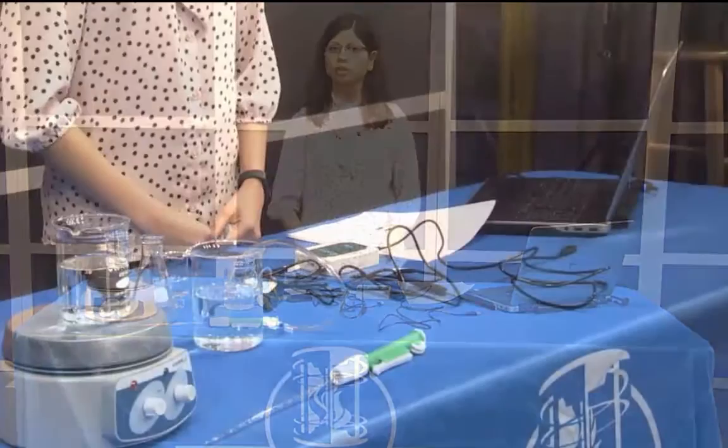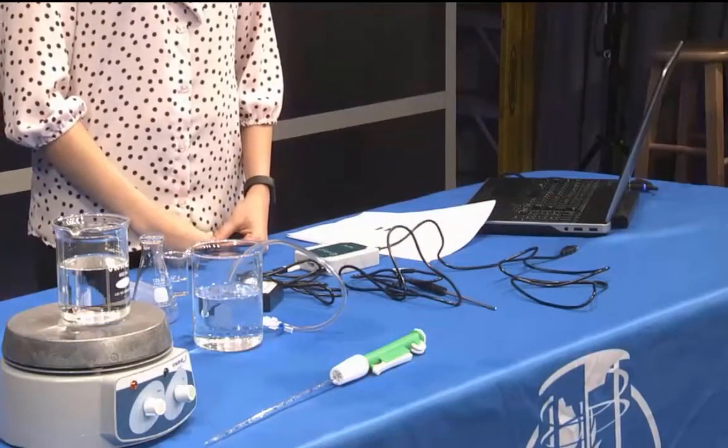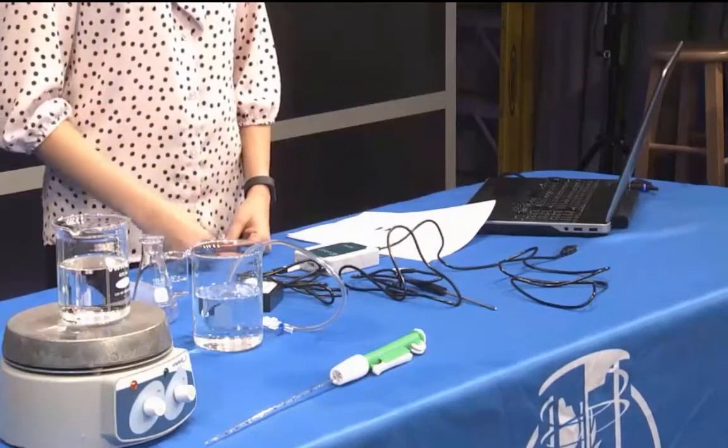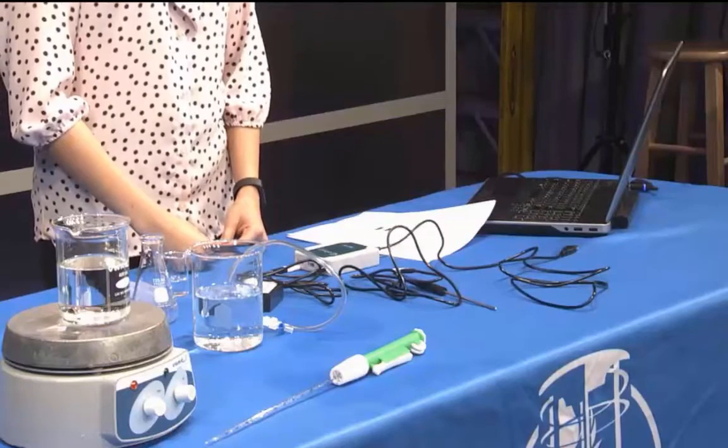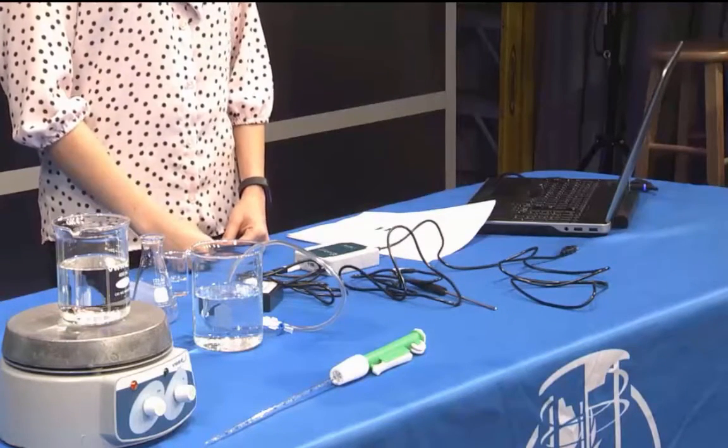You will be given two beakers. The 400 milliliter beaker filled with about 200 milliliters of water should be put on a hot plate on medium heat to begin heating. The 600 milliliter beaker should be filled with just enough room temperature water that covers the bulb and neck of the 125 milliliter Erlenmeyer flask. You will be adding more water to this beaker, and you do not want it to completely cover the flask.